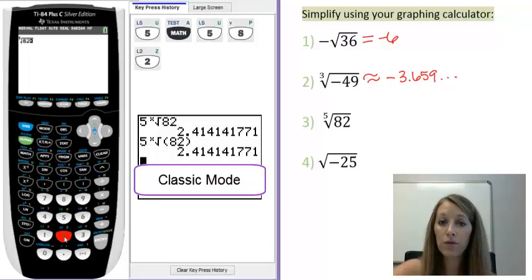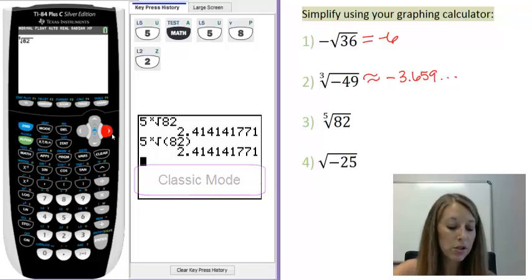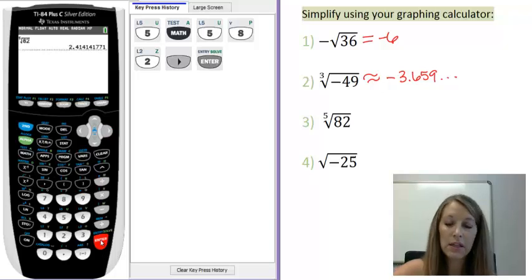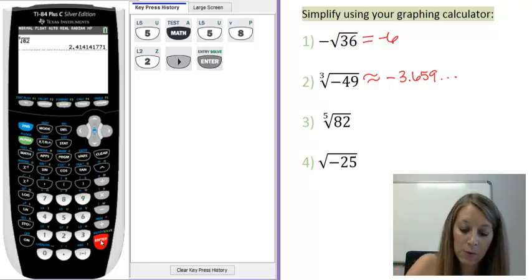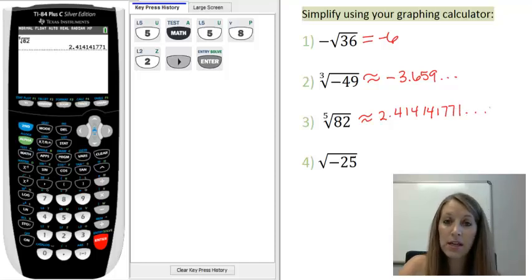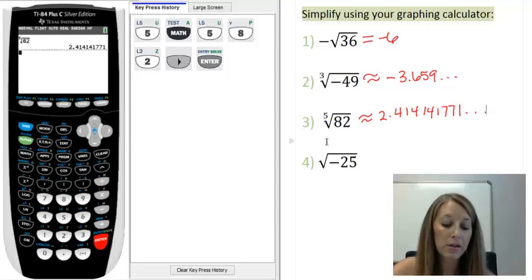Type in 82. If you had an older version, you would have to type in the 82 and then close the parentheses. Here, we push the arrow button to get out of the root, and we can see that, again, this is another decimal. It's an approximation of 2.414141771, and again, this decimal does not stop. It keeps continuing on, even though the calculator stops here. The decimal can only display up to so many decimal points.